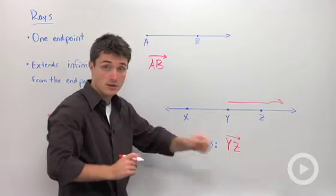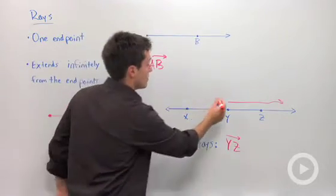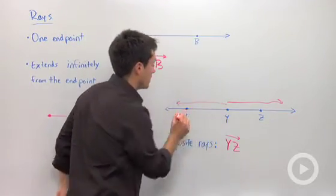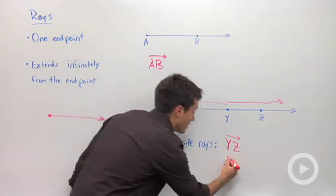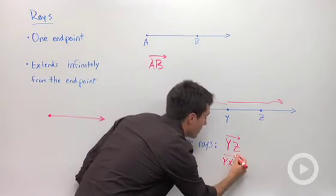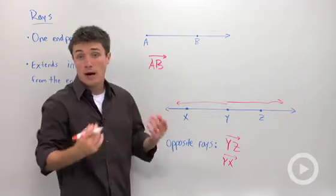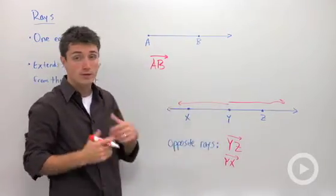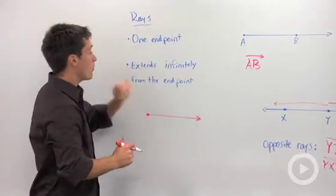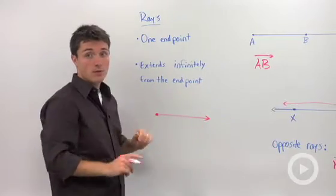where the arrow is over the Z because it starts at Y, and the opposite one would be the ray starting at Y passing through X. So I could label this as ray Y, X. So opposite rays share a common endpoint, and rays in general have one endpoint and extend infinitely from that endpoint.